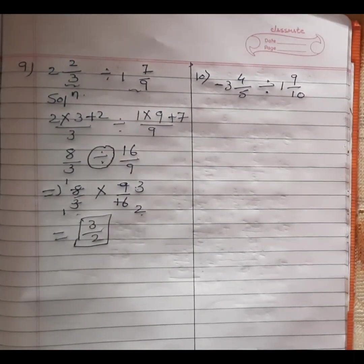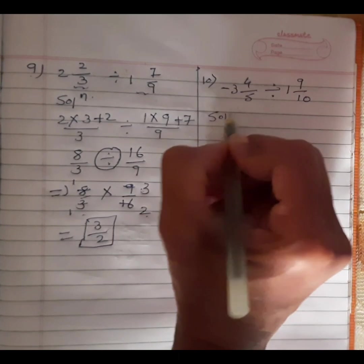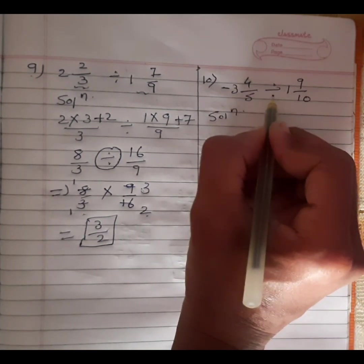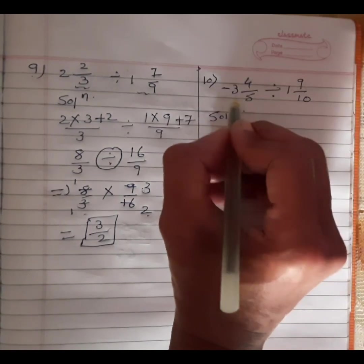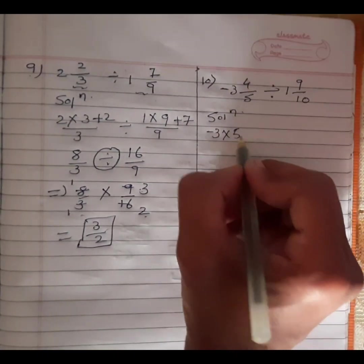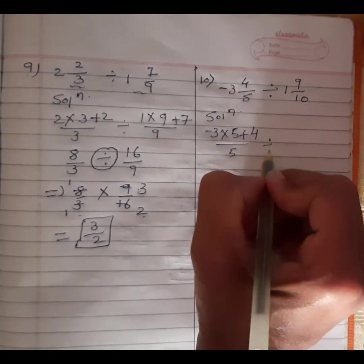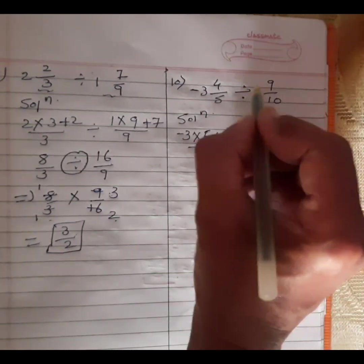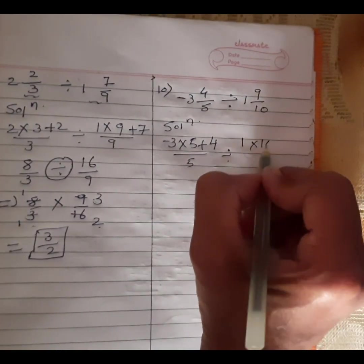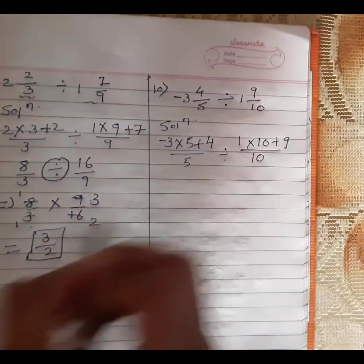In the same way, the next question — this is the 10th question from the textbook. Minus 3 and 4 by 5 divided by 1 and 9 by 10. Minus 3 is the whole number; we multiply with denominator 5 and add with numerator 4, divided by 5. And 1 is the whole number in mixed fraction; we multiply with denominator 10 and add with numerator 9, divided by 10.